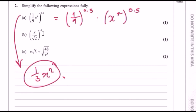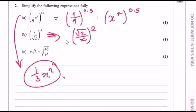For part b, when you have a negative power the first step is to take the reciprocal — flip it upside down — so it becomes root 2 over x. Then raising to the power 2 means squaring both terms: root 2 squared is 2, and x becomes x squared.